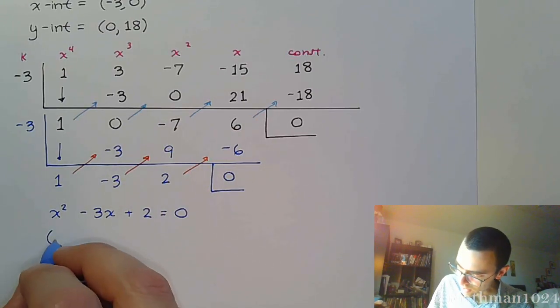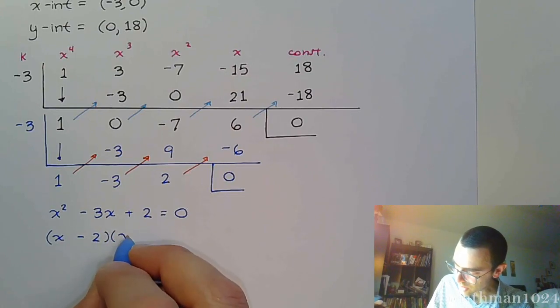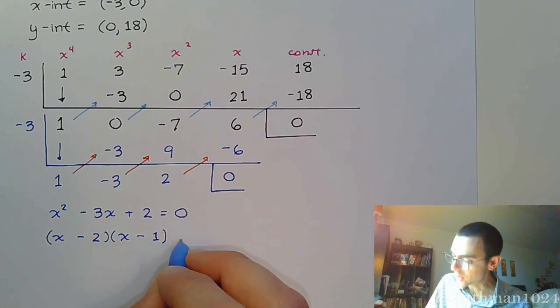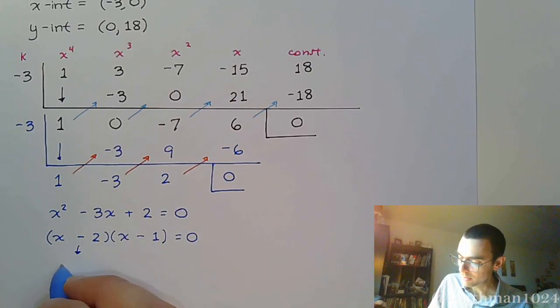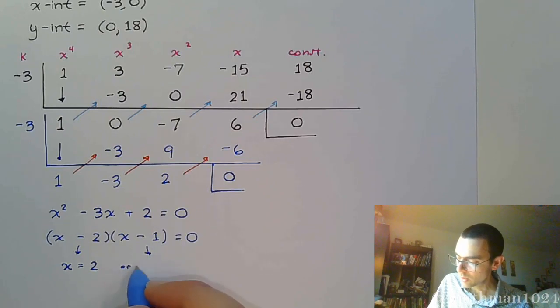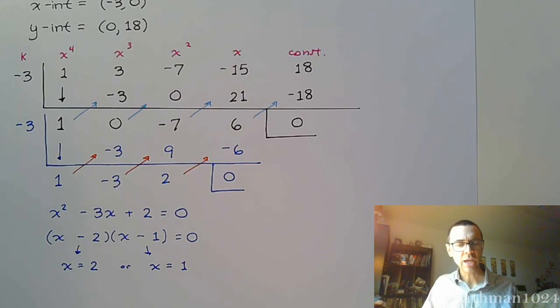So this guy factors as (x - 2)(x - 1). Those are the factors of two that add to three. And from here, x equals two, or x equals one.